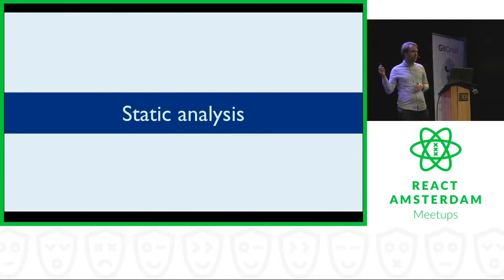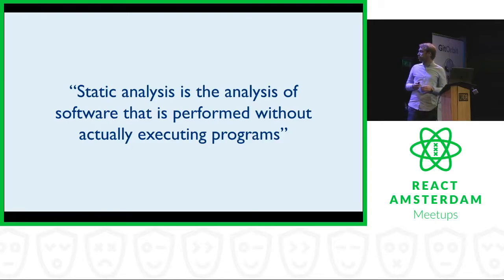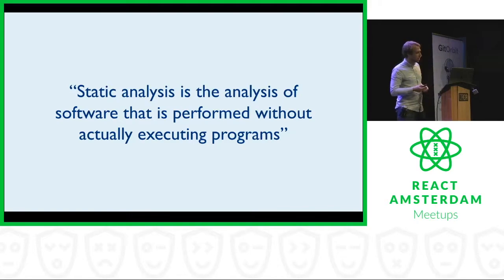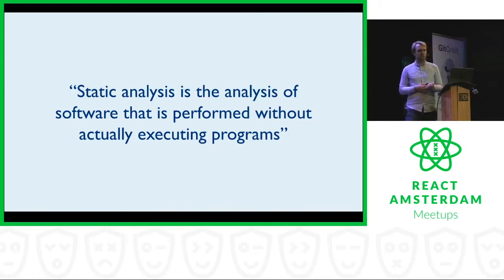The first layer is static analysis — this is the layer I thought of all the way at the end. Static analysis is the analysis of software that is performed without actually executing programs. Examples of static analysis are linting and types for JavaScript. Who uses linting in their development workflow? Nice, most of us. And who uses types for JavaScript, like Flow or TypeScript? That's a bit less.